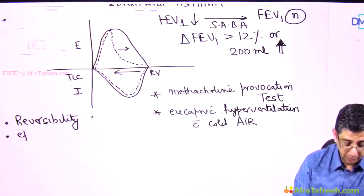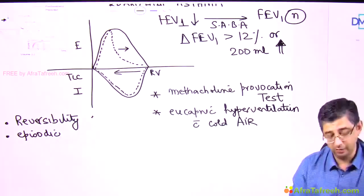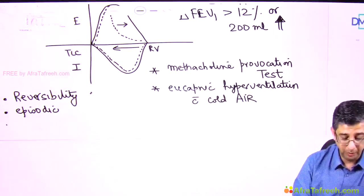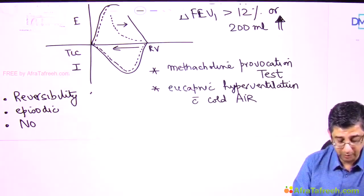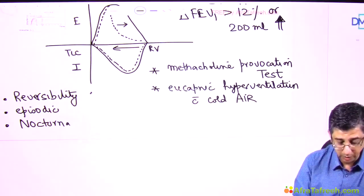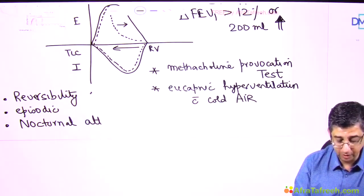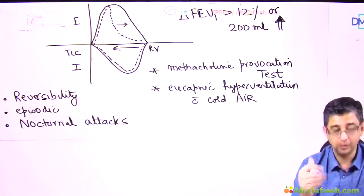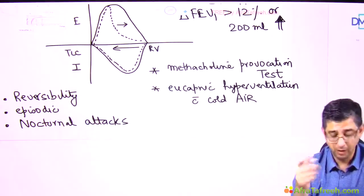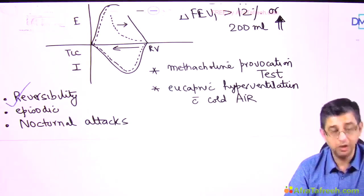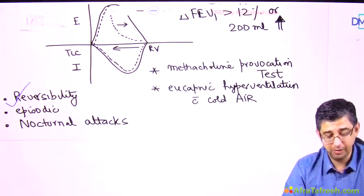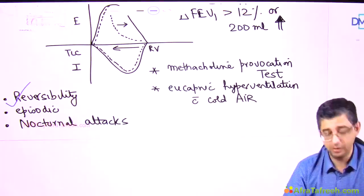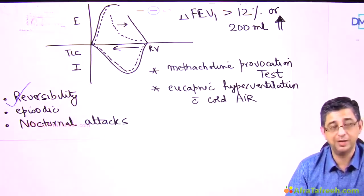The second feature in bronchial asthma is episodicity. Every time there is exposure to dust, pollution, or a cold environment, an attack can develop. Most attacks of asthma are nocturnal. The only explanation for this is that at night, the air is relatively colder, and cold air can trigger bronchospasm. Out of the three criteria, the first one — reversibility — is absolute and a must for demonstrating asthma. If you have all three demonstrated, you are on target for diagnosing asthma in a patient.